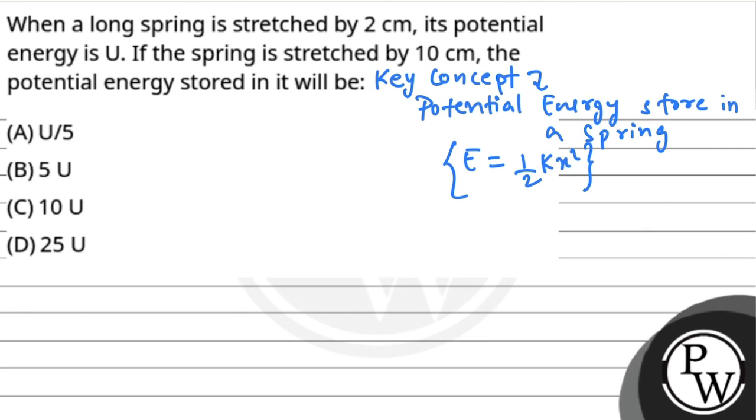When the spring is stretched 2 cm, the energy stored is U, which means x₁ equals 2 cm. Then the energy E₁ equals U.